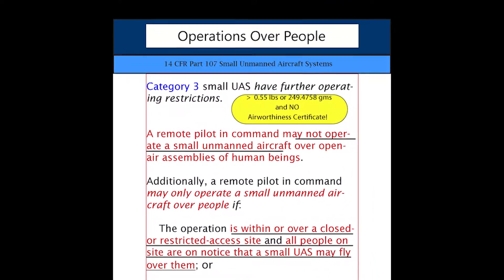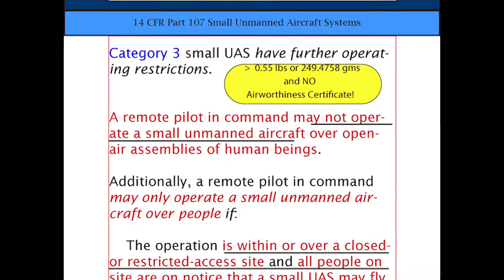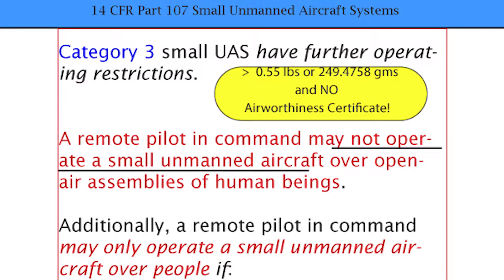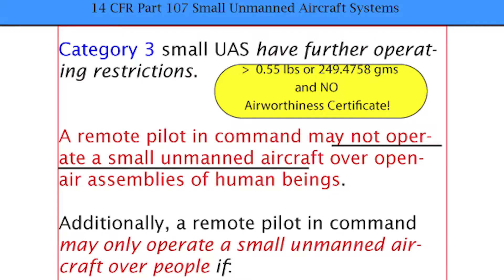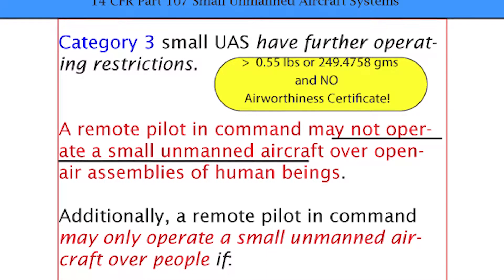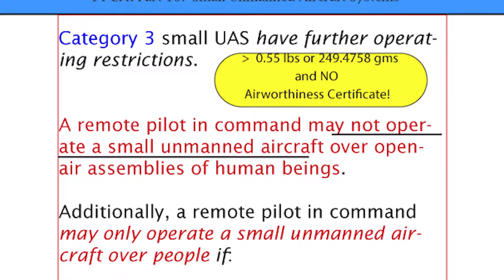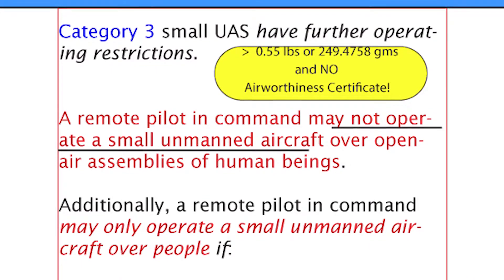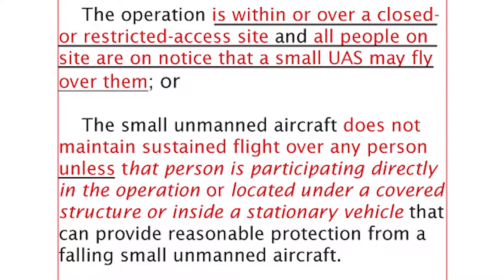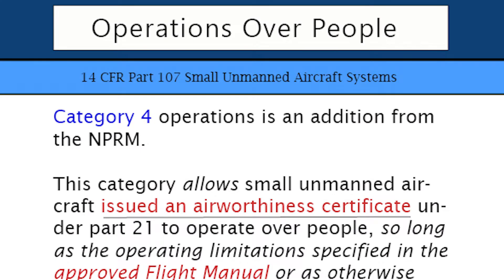Category 3 — operations over people. Category 3 small UAS have further operating restrictions. Remember that they weigh greater than 0.55 pounds and there is no airworthiness certificate. A remote pilot in command may not operate a small unmanned aircraft over open air assemblies of human beings. Additionally, a remote pilot in command may only operate over people if the operation is within or over a closed or restricted access site and all people on the site have been notified that a drone is flying over them, or the small unmanned aircraft does not maintain sustained flight over any person unless those people are directly participating in the operation or are located under a covered structure or inside a vehicle.